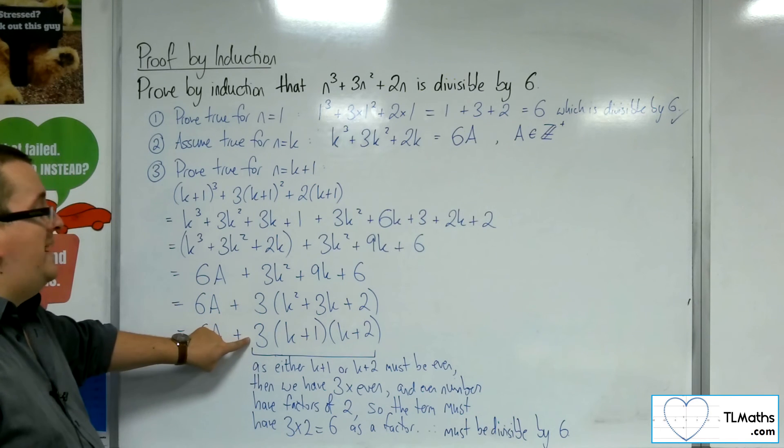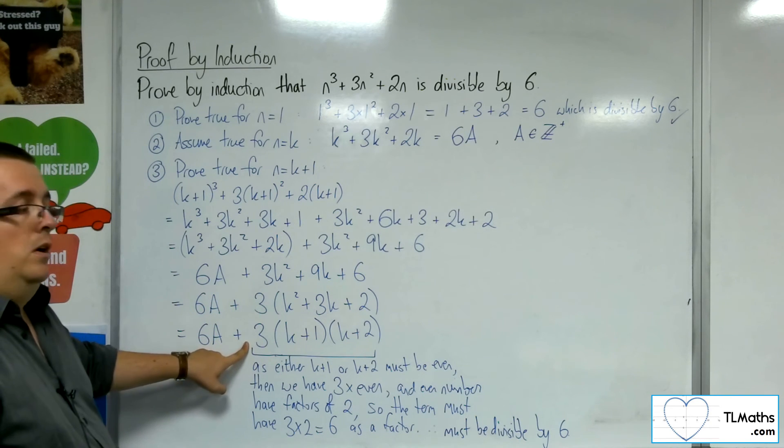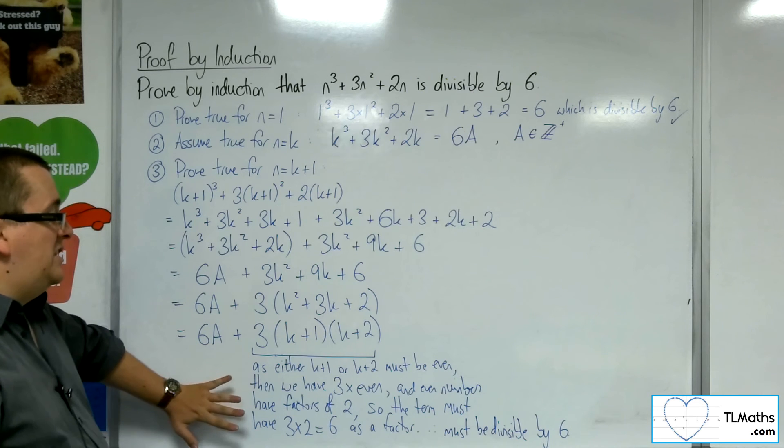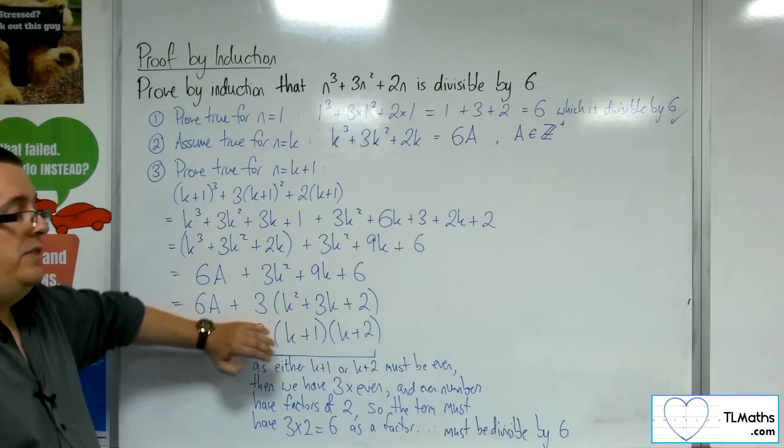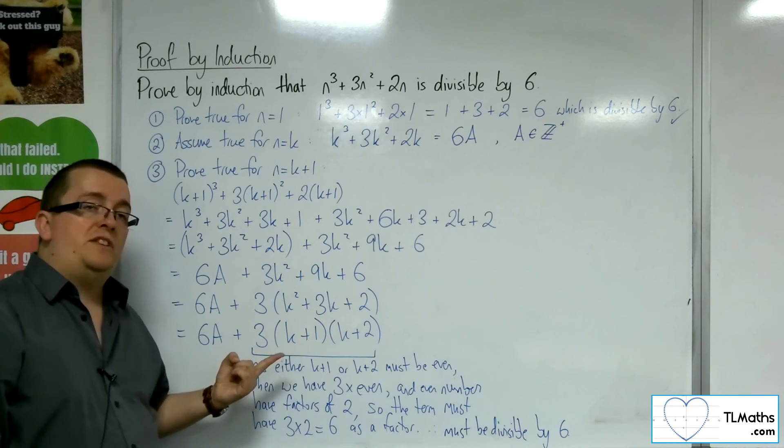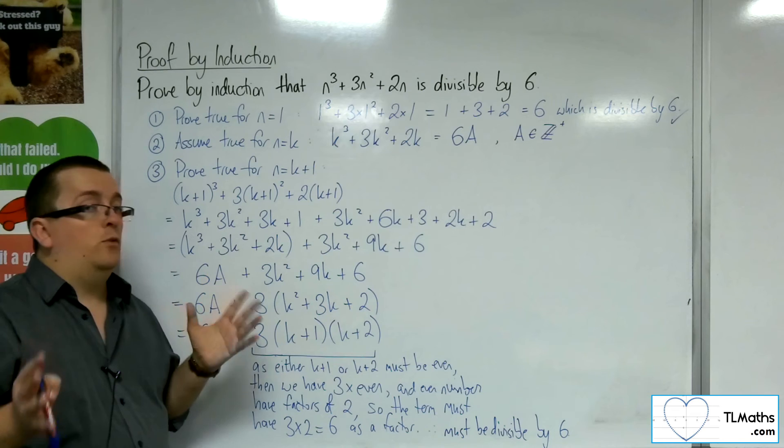Because at this point, there wasn't really much that we could do other than explain as to why the k plus 1 times k plus 2 was even, and therefore, that term must have a factor of 6. There was no real other way of doing it.